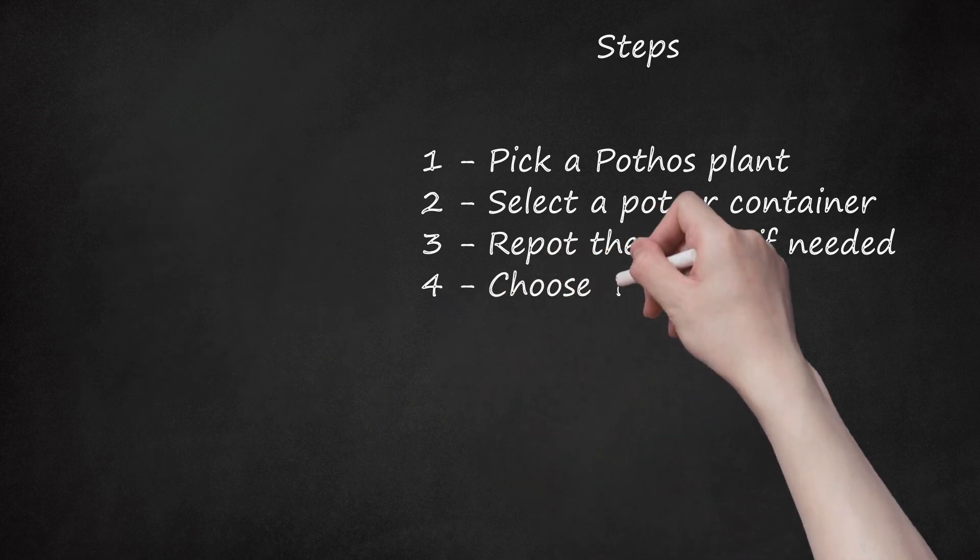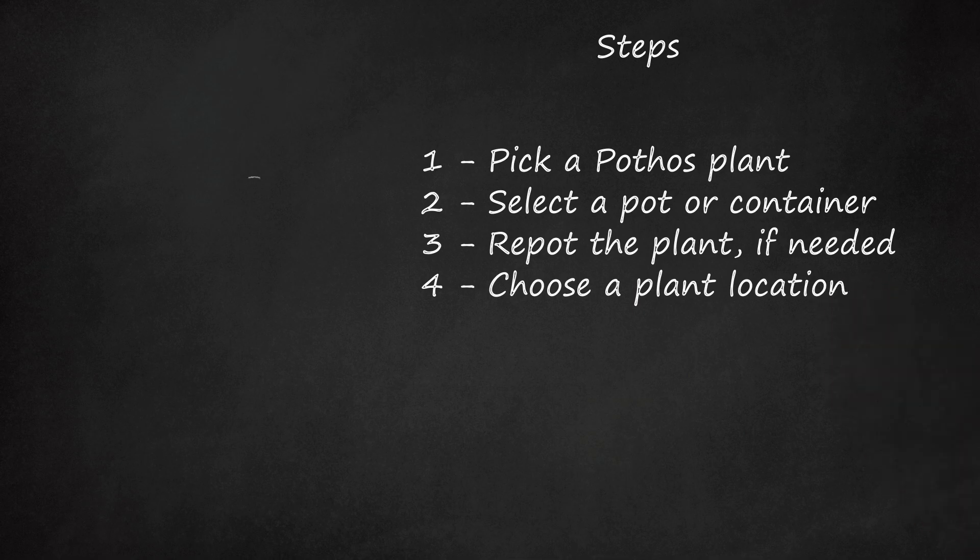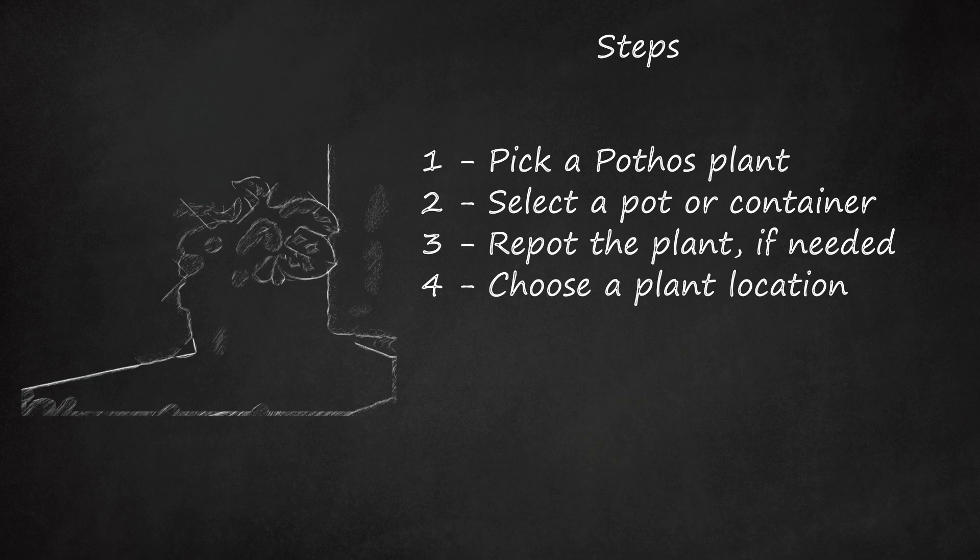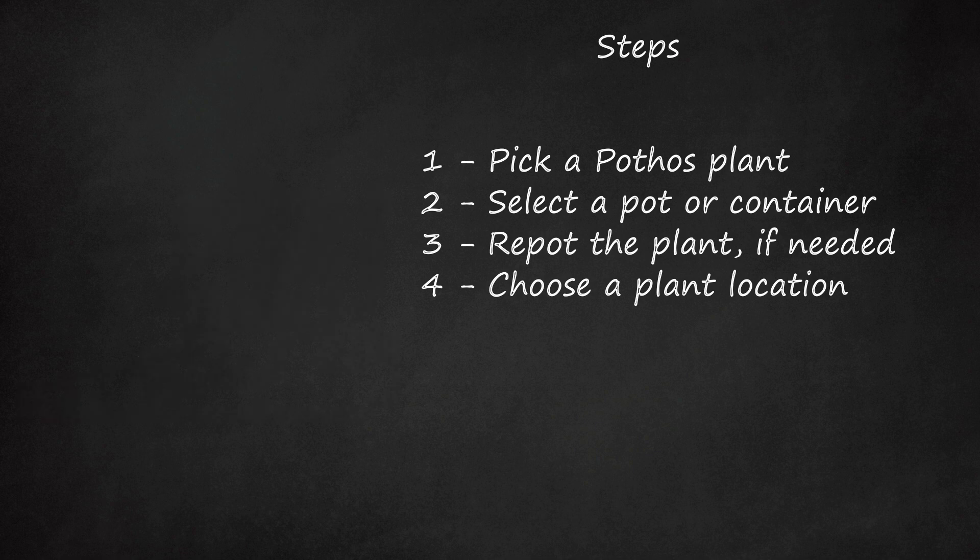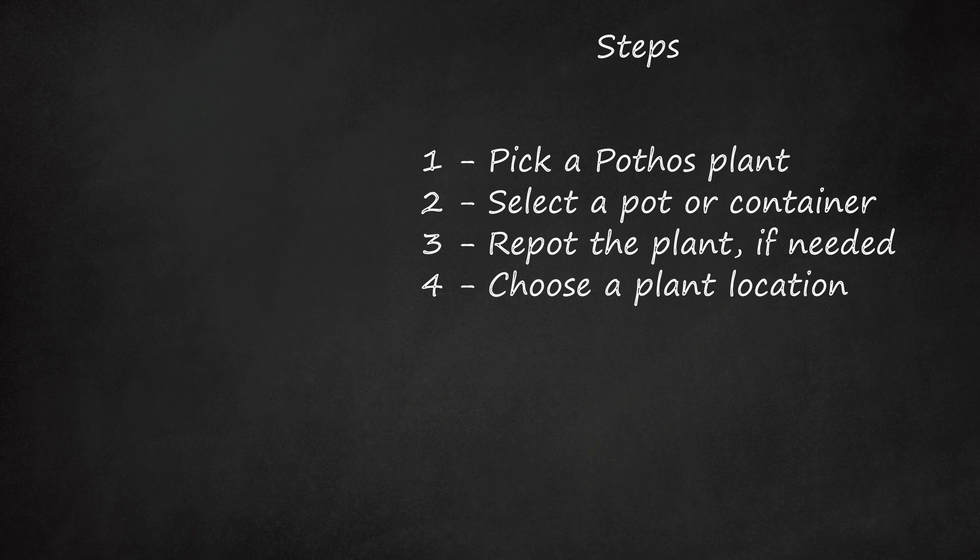Step 4: Choose a plant location. Where should a pothos plant go? Pothos plants thrive in every light condition, except total darkness and direct sunlight. Bathrooms, bedrooms, hallways, and so on, make excellent locations.